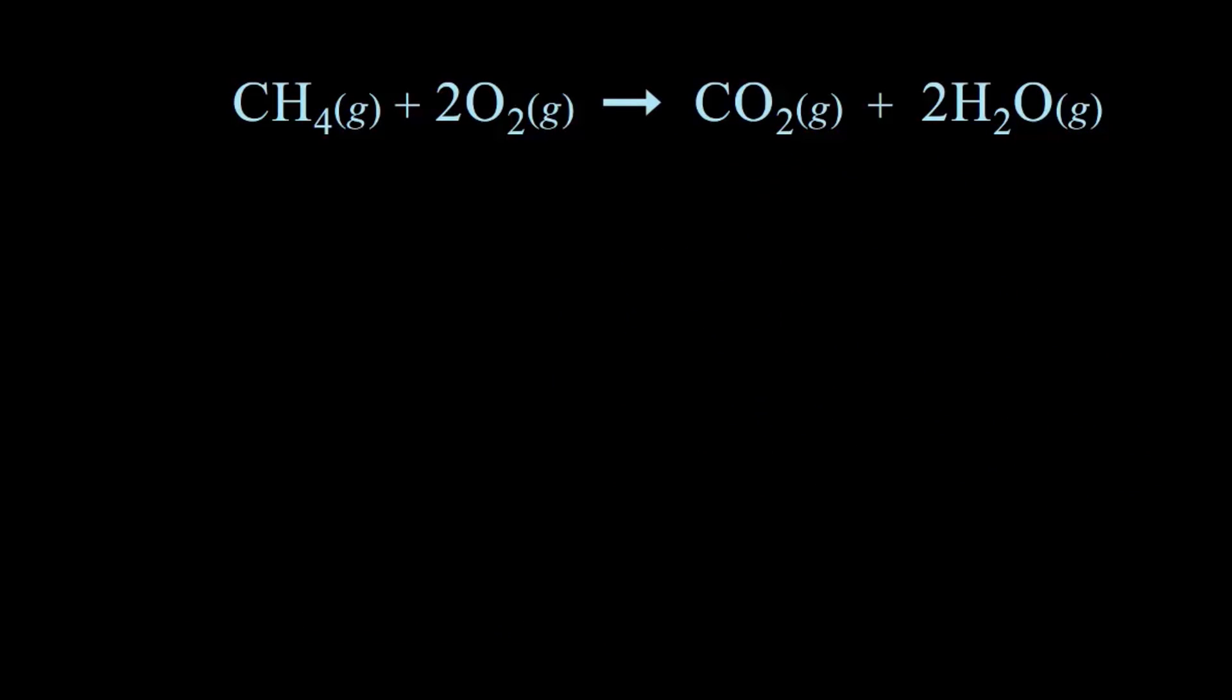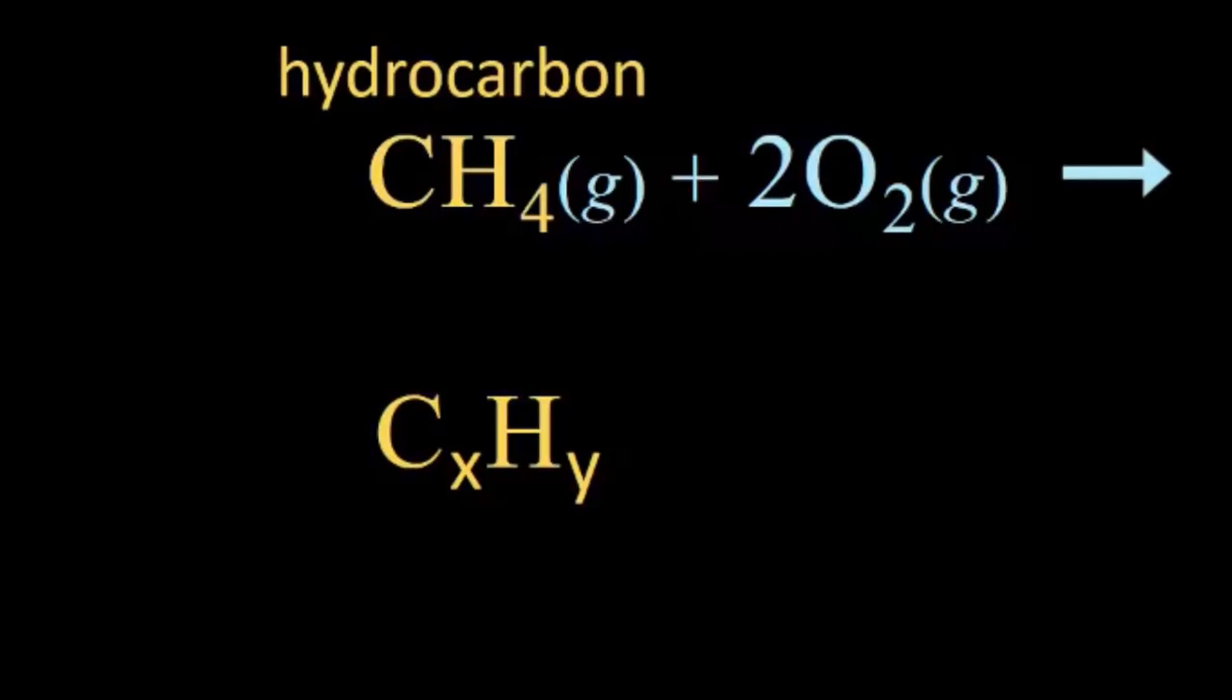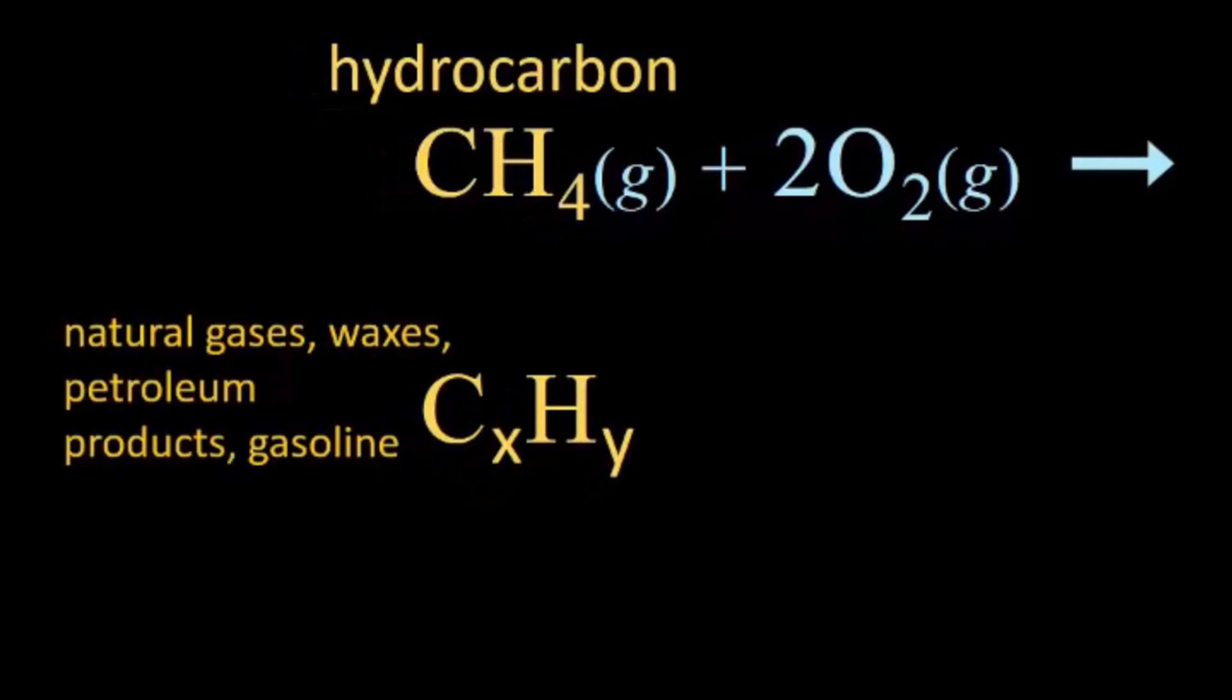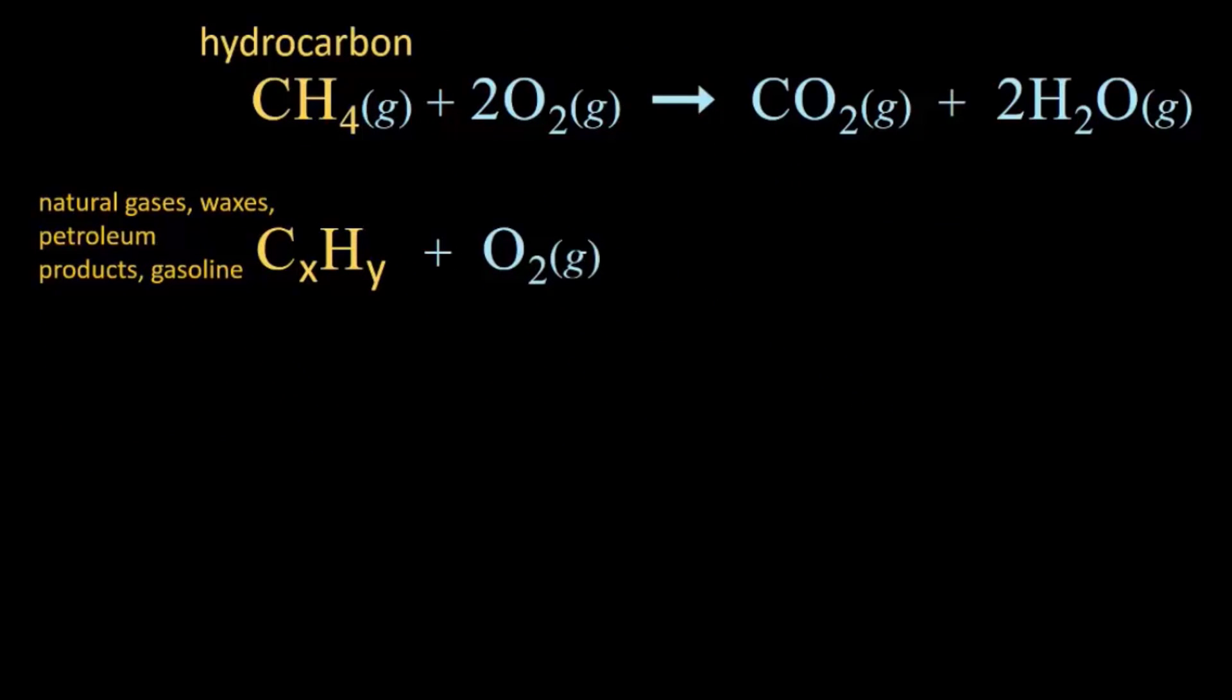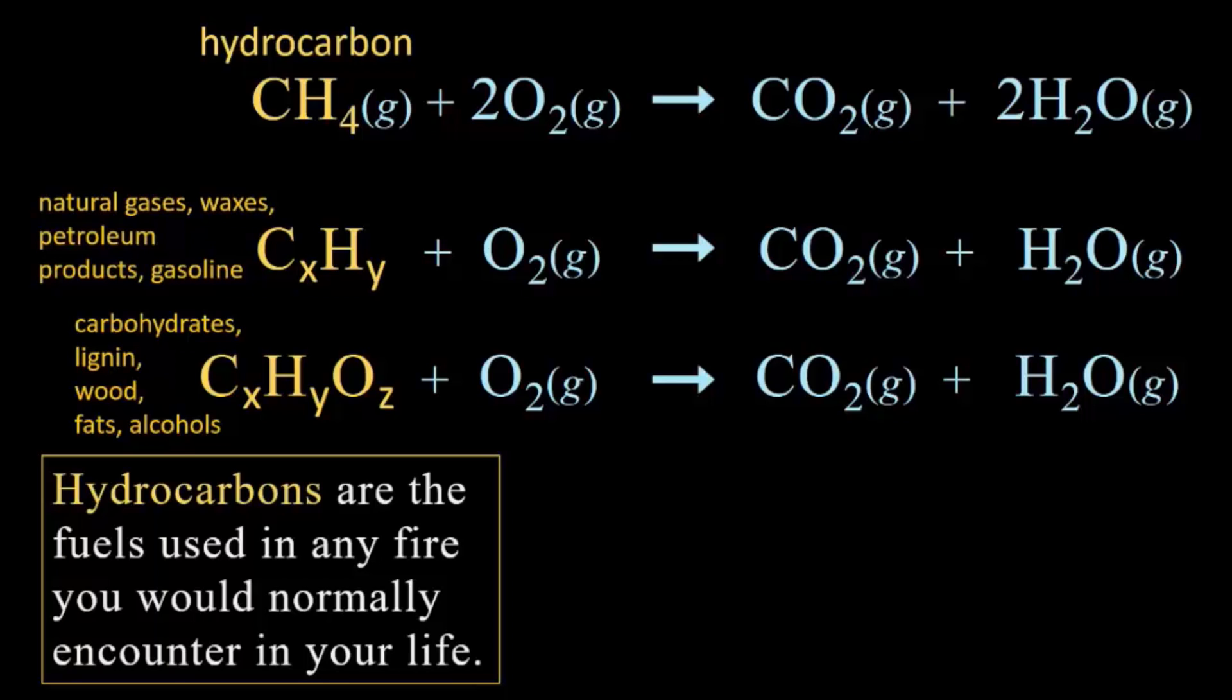Everything we've been talking about here can be applied in general to just about any fire you encounter. CH4 is what is called hydrocarbon and hydrocarbons provide the fuel for almost any fire you might see. Hydrocarbons are any compounds made out of carbon and hydrogen. There are many, many hydrocarbons that we encounter such as natural gas, and methane is the largest component of natural gas. So that's what you see burning on your stove, as well as waxes, petroleum products such as gasoline. And when you burn them, they produce carbon dioxide and water and light. Hydrocarbons can also be somewhat oxidized, including carbohydrates and lignin, which incidentally are the two major components of wood. And there are also fats and alcohols. And when you burn them, you produce carbon dioxide and water and light.